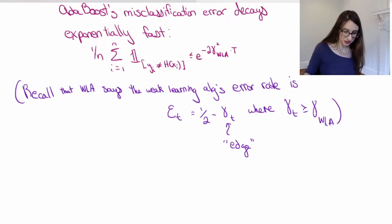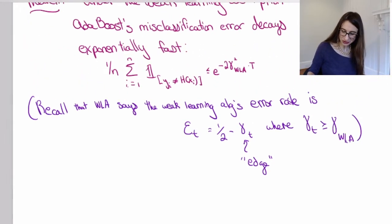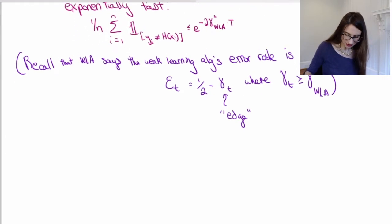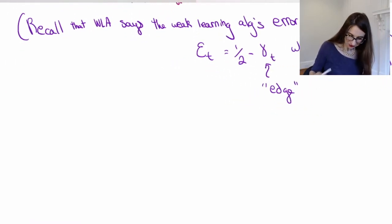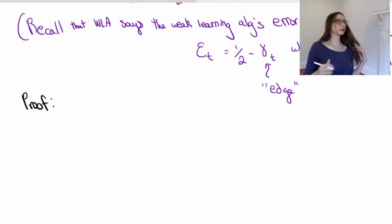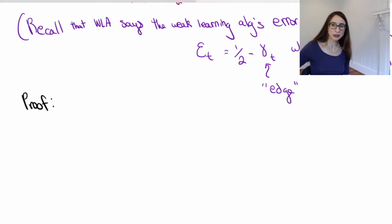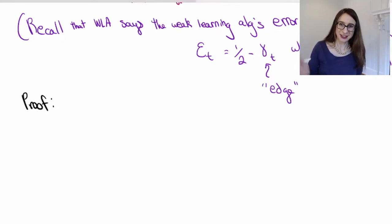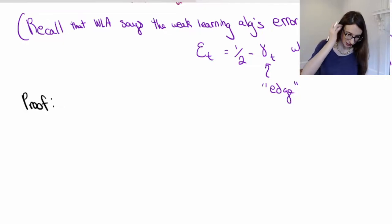So let's actually go and try to prove this thing — and it seems like too good to be true that the error decays exponentially fast, but that's the weak learning assumption for you. There are two main steps in this proof. The first is to write down the recursion between the exponential loss at time t+1 and time t, and then it's to unravel that recursion.